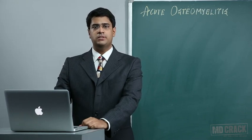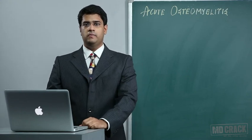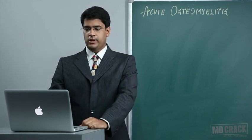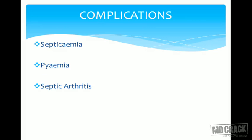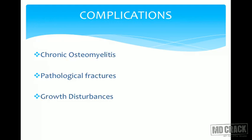Complications of acute osteomyelitis must be treated aggressively from the beginning for good results. Septicemia can occur if the infection worsens and spreads throughout the body, creating a dangerous condition. Pyemia may develop as pus keeps increasing. If the infection affects the joint, severe septic arthritis can result. Acute osteomyelitis can easily progress to chronic osteomyelitis if not treated. Pathological fractures can occur as bones become weak from uncontrolled infection. Growth disturbances can also manifest if the epiphysis and growing ends are affected.